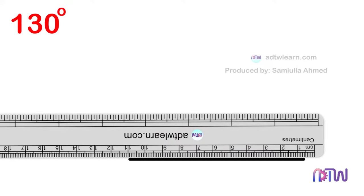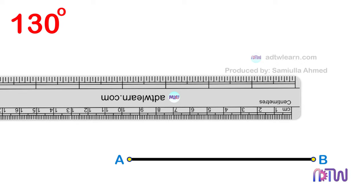First, we need to draw a line segment. To do so, take a ruler and draw a line segment. Label the endpoints as A and B. Extend this line to a suitable length.